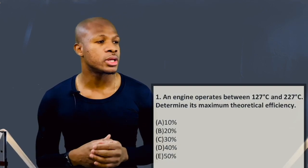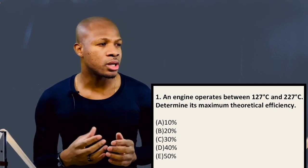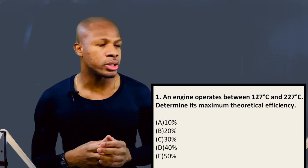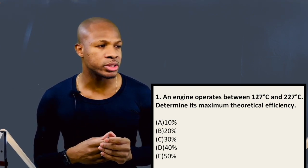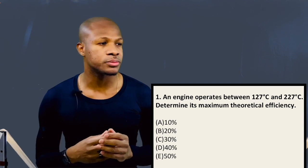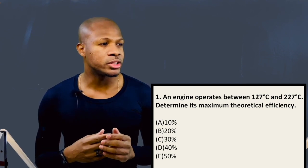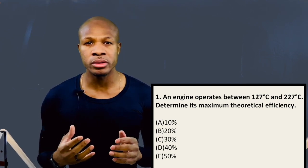So today, let's answer three questions. Let's take a look at question number one. Question number one says an engine operates between 127 degrees Celsius and 227 degrees Celsius. Determine its maximum theoretical efficiency.